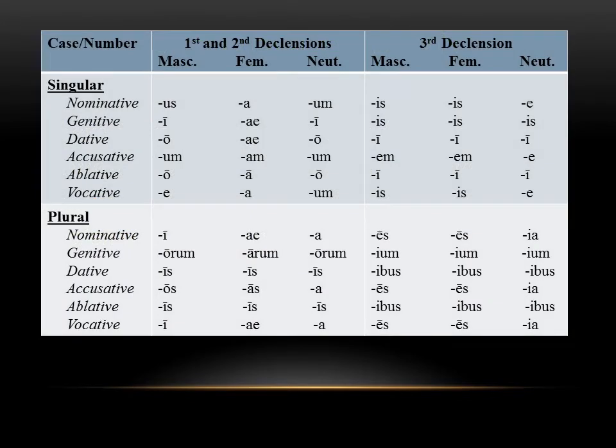Looking at our full chart of first and second declension adjectives and third declension adjectives, we can start to see some patterns. In the third declension, the adjectives that are masculine and feminine have the exact same endings — those two columns are identical. That just means there's one less thing for you to memorize. In the neuter, you'll notice the endings are not quite the same as what we remember from third declension nouns — there are some slight differences, and neuter doesn't have the same endings as masculine and feminine.